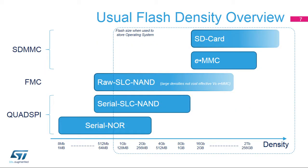This slide shows the usual flash density available by technology. Note that a flash memory with a size less than 1 gigabit (128 megabytes) cannot be used alone, as such size does not allow the storage of the operating system, but can store data when used in conjunction with another larger flash holding the operating system itself.